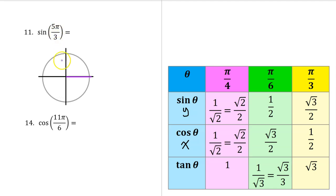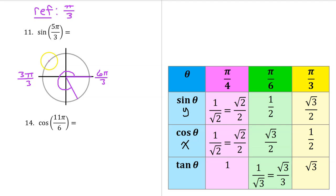To find the sine of 5 pi over 3, we first must locate the quadrant of the terminal side. Let's think of pi as 3 pi over 3. Doubling this, we get 2 pi, which equals 6 pi over 3. So 5 pi over 3 will be 6 pi over 3 minus 1 pi over 3. The reference angle is pi over 3 and the terminal side is in the fourth quadrant. Because the reference angle is pi over 3, the sine of 5 pi over 3 will be plus or minus the sine of pi over 3, which is radical 3 over 2. Since sine is the y-coordinate and y-coordinates are negative in the fourth quadrant, the answer is negative radical 3 over 2.